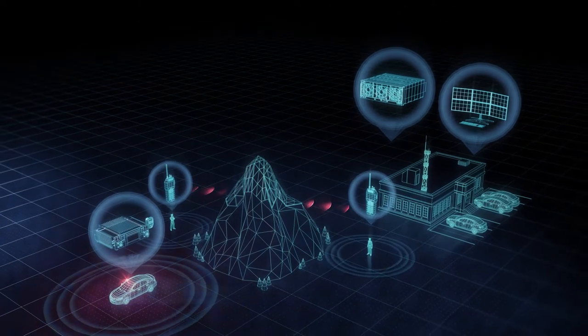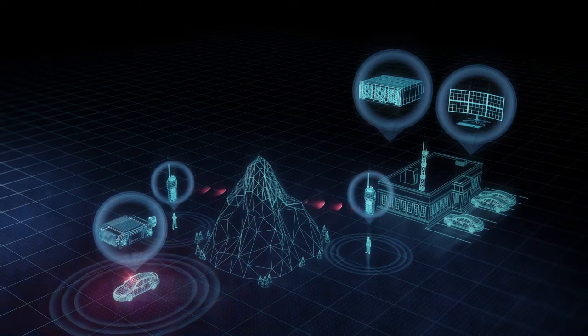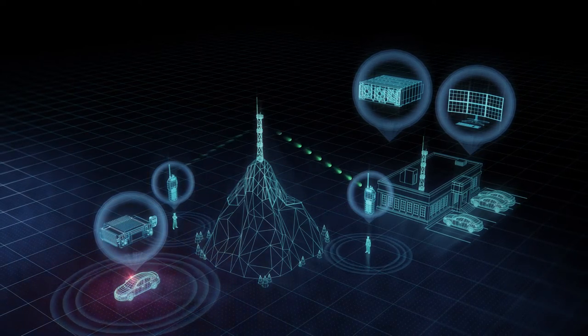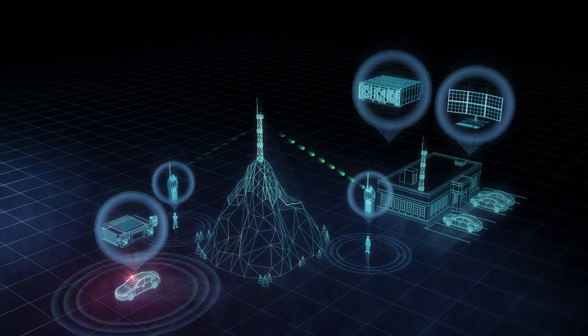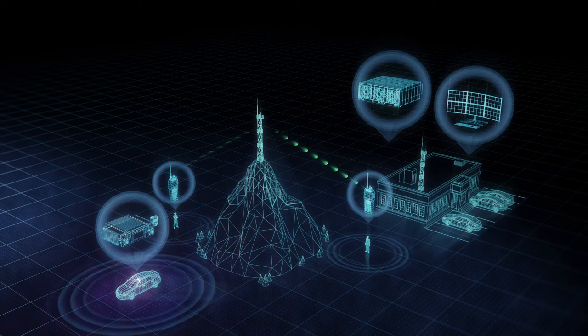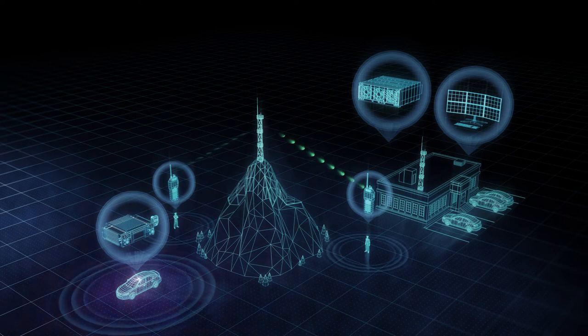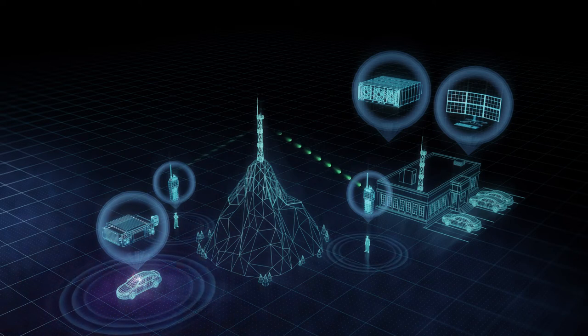But what happens when multiple users need to communicate around large obstacles or over long distances? One approach is to put a repeater in a strategic location to provide lines of sight throughout a larger area. The repeater retransmits the signal it receives at a higher power, creating a larger coverage area that spans a greater distance and reaches more users.